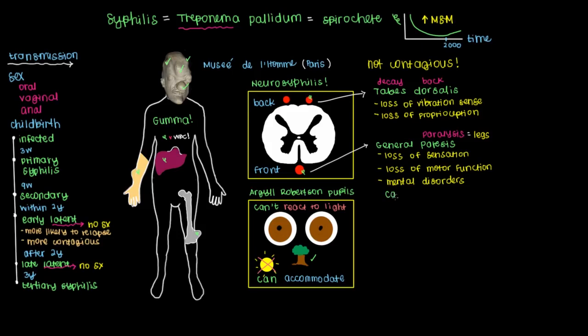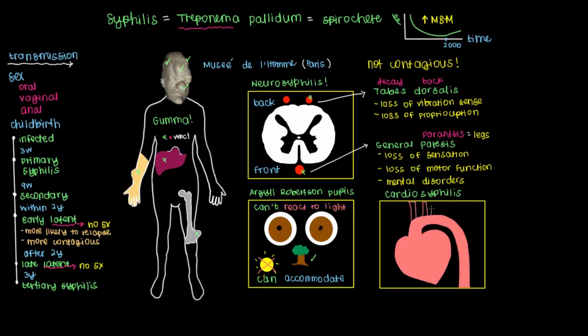Finally, the last type of symptom we can get associated with tertiary syphilis is what's referred to as cardiosyphilis. And just as the name suggests, that involves an infection related to the cardiovascular system. So I'll draw the heart first, and then the blood vessels that come off of it. Now I mentioned earlier that syphilis likes to attack our blood vessels. So it only makes sense that syphilis in its final stages will finally reach and attack the largest blood vessel in our body, and that's the aorta.